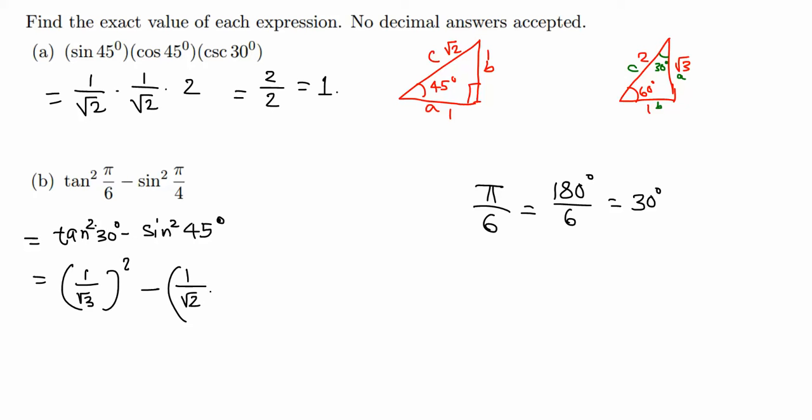Let's simplify. 1 squared is just 1 over root 3 squared. The square and root cancel, so 1 third minus 1 squared. 1 over root 2 squared, square and root 2 cancel, just 2. Now we need to combine these two fractions, 1 third minus 1 half. We need to make a common denominator.